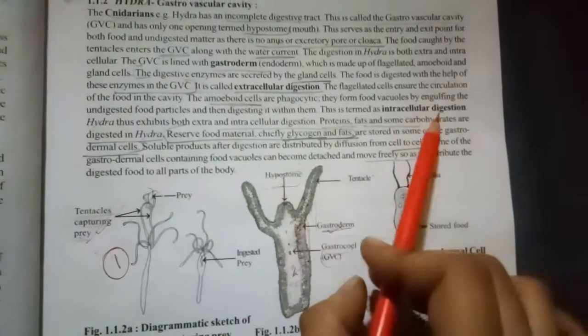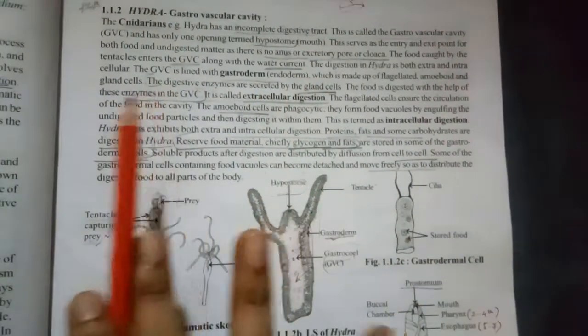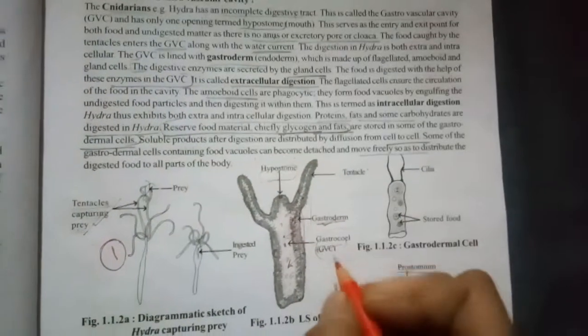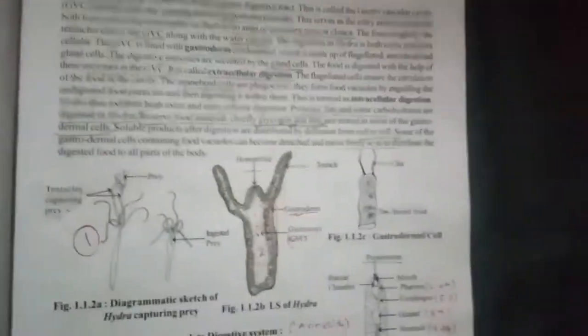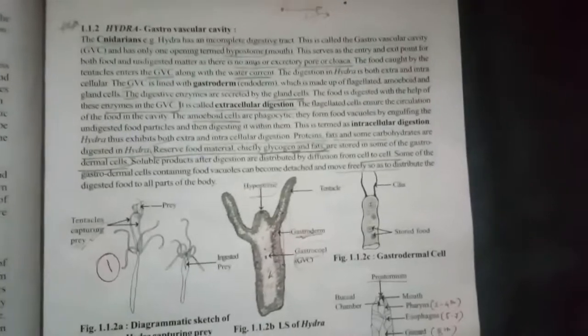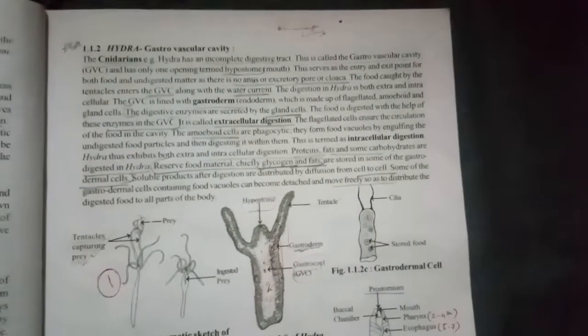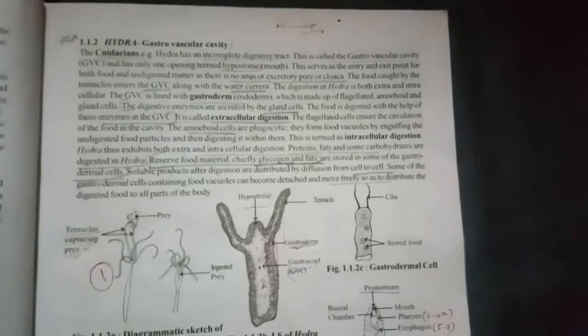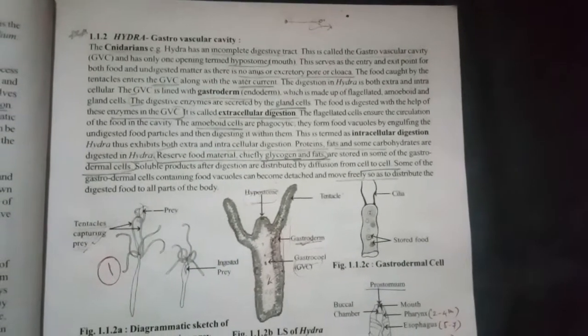So the digestion in two ways - extracellular, intracellular. These are some points that you have to remember and you have to draw the diagram. Then you will get full marks. So incomplete digestive system and GVC, gastroderm, amoeboid cells, secretion of digestive enzymes, extracellular digestion, phagocytosis, intracellular digestion.